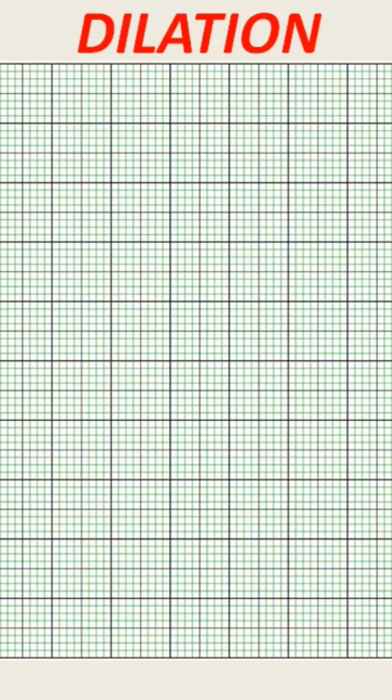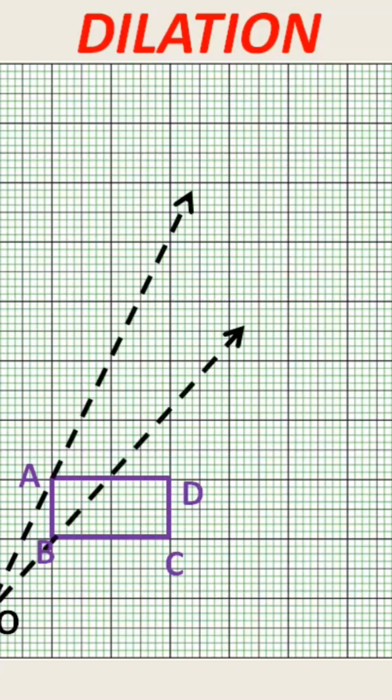Here we see how to enlarge this rectangle ABCD. Take a point O outside the rectangle which we call the center of dilation, and through O draw lines touching the vertices of this rectangle ABCD.